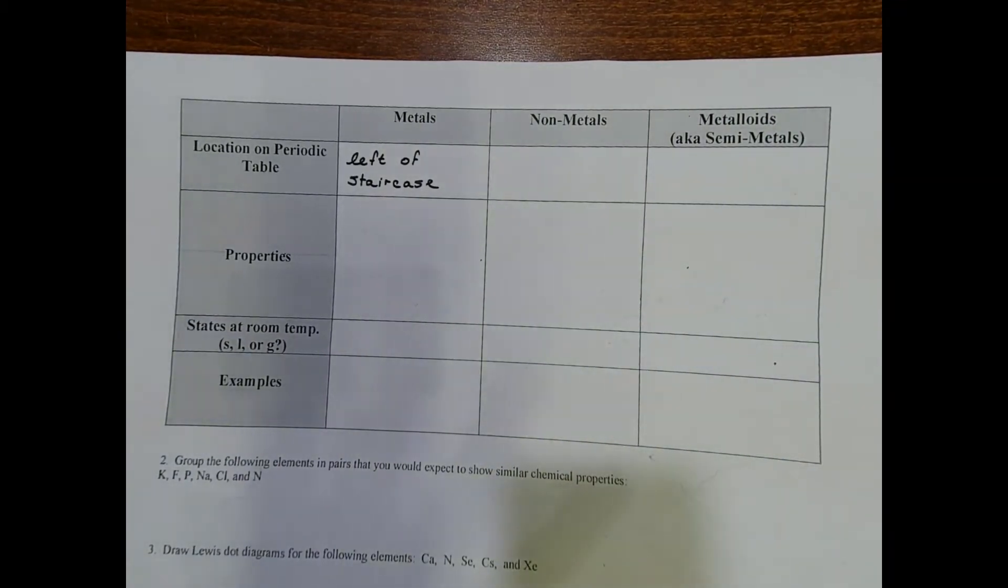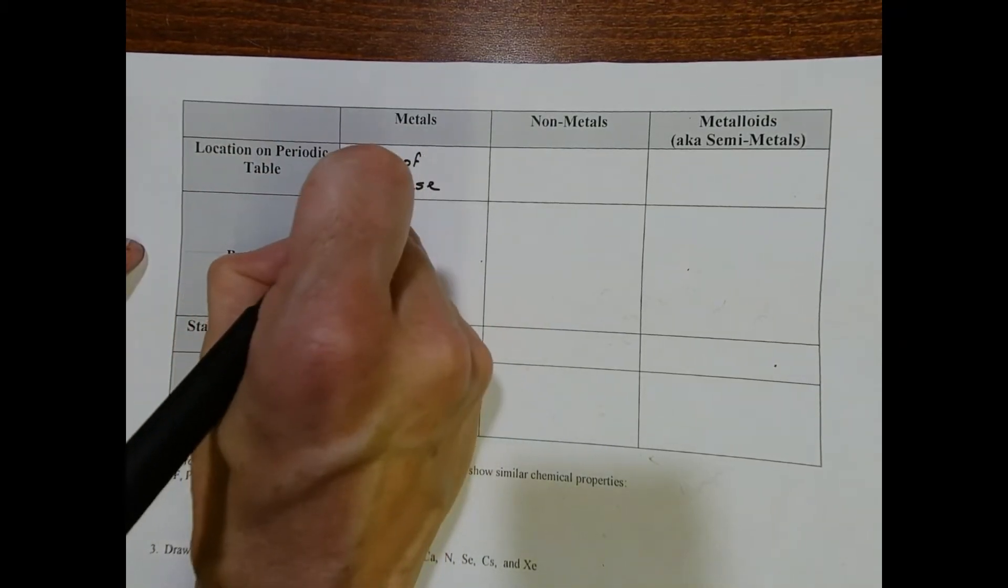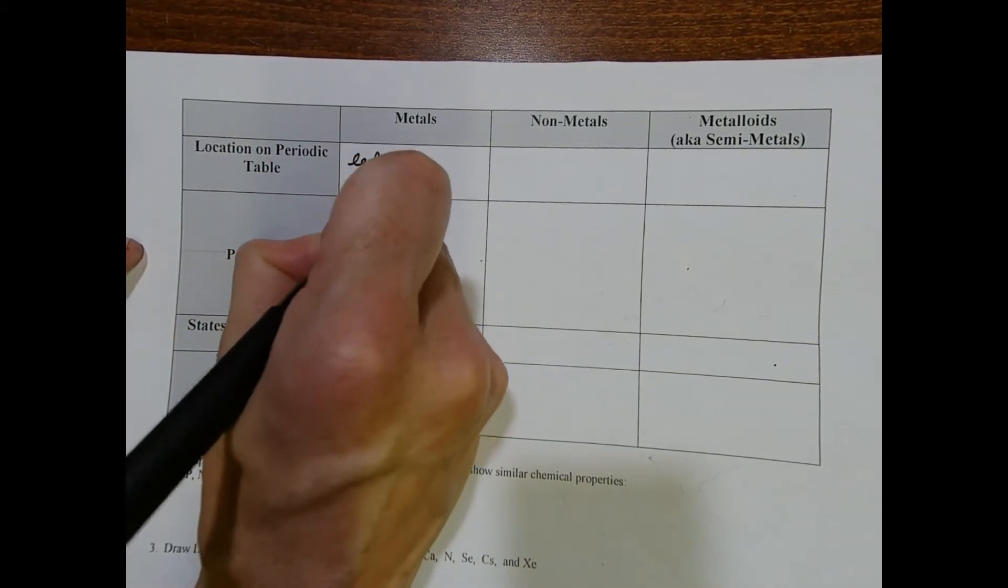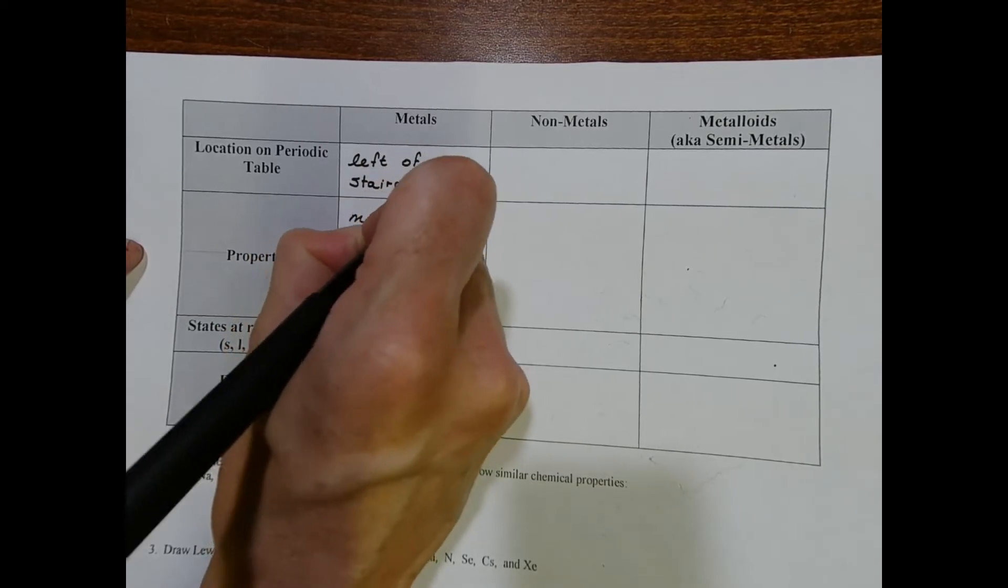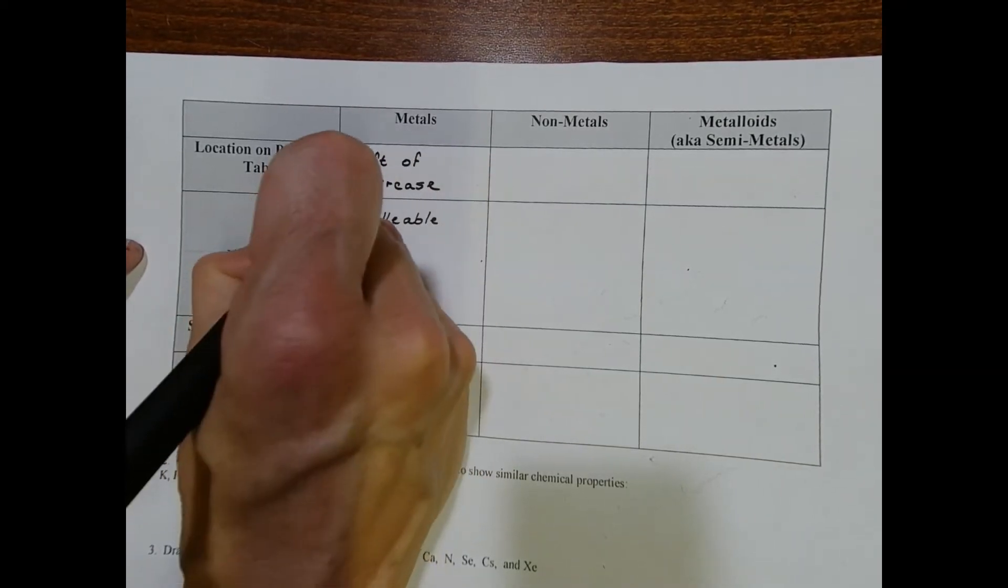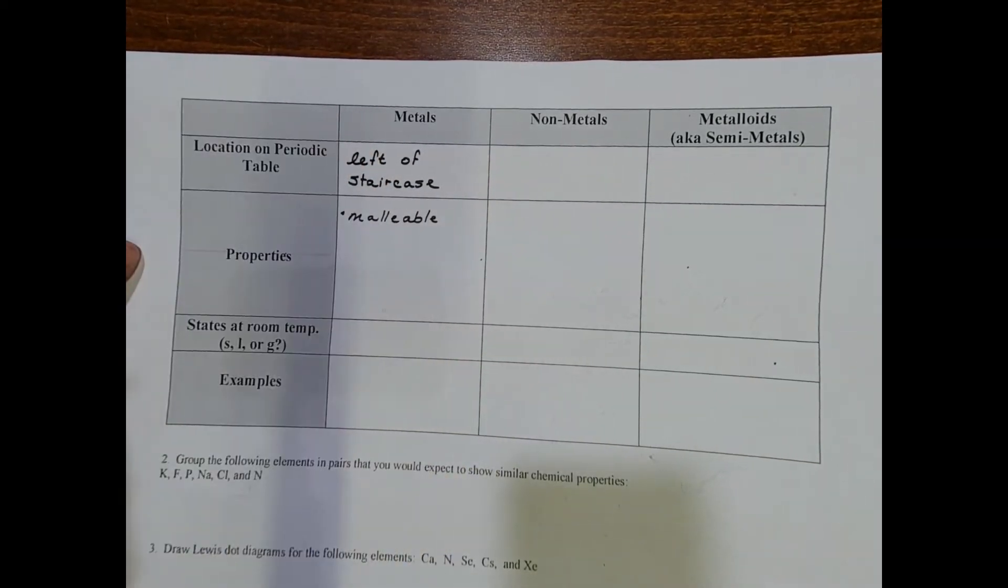I'm going to write that down. In addition, you may have noticed that both metals, but in particular the aluminum foil, was very shiny. If you have gold jewelry or silver jewelry, you know metals tend to be shiny.